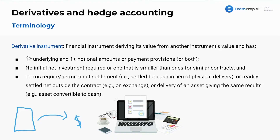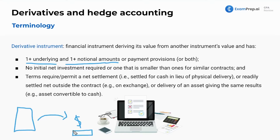The specific criteria for a derivative: it needs to have one underlying and one notional amount, or payment provisions, or both. You'll see questions about what it needs — it needs both of these. An underlying is basically the value of the asset tied to the piece of paper — say, a gold bar. The notional amount is the dollar amount that the gold bar is worth, say $100.